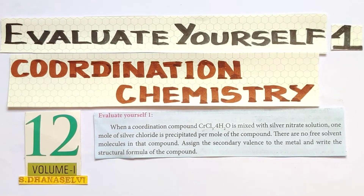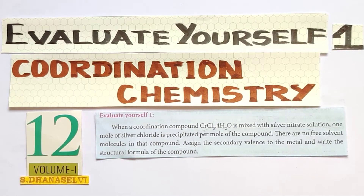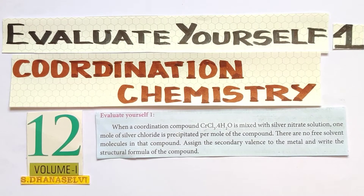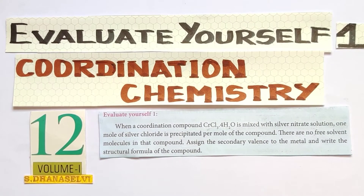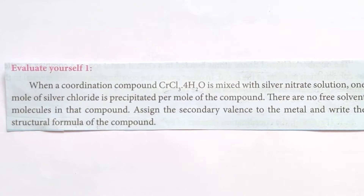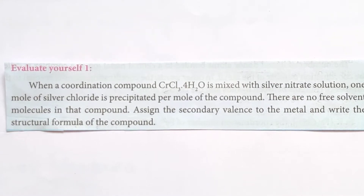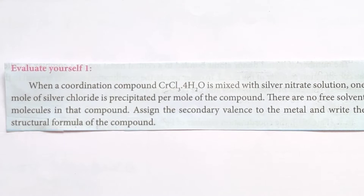Hello students, Vanakam. We are discussing Coordination Chemistry chapter, Evaluate Yourself Questions, Question No. 1. When a coordination compound CrCl3·4H2O is mixed with silver nitrate solution, 1 mole of silver chloride is precipitated per mole of the compound. There are no free solvent molecules in that compound. Assign the secondary valence to the metal and write the structural formula of the compound.